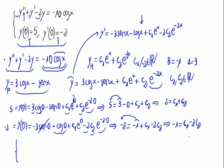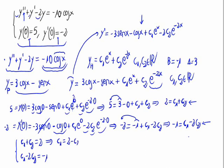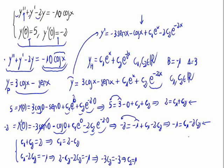So we have the system: c₁ + c₂ = 2 and c₁ - 2c₂ = -1. From the first equation, c₁ = 2 - c₂. Substituting: 2 - c₂ - 2c₂ = -1, so -3c₂ = -3, giving c₂ = 1. Therefore c₁ = 2 - 1 = 1.